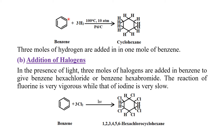दूसरे hydrogenation reaction में conditions change हो गई हैं: temperature 100 degree Celsius, pressure 10 atmospheres, और catalyst platinum charcoal।